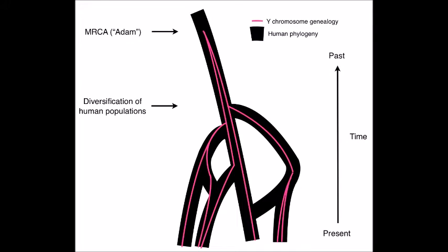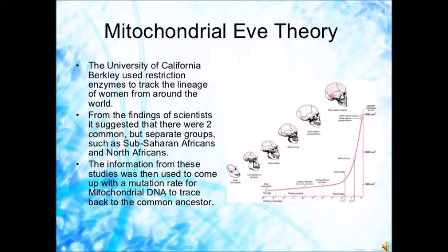If you trace the patrilineal lineage of all humans — that is, an unbroken exchange of the Y chromosome from one generation to the next — you will eventually come to the most recent Common Male Ancestor of all living humans, known generally as Y-chromosome Adam. Following the matrilineal lineage, which is the unbroken chain of mothers passing on their mitochondria, we eventually come to the most recent female Common Ancestor of all living humans, known as Mitochondrial Eve.